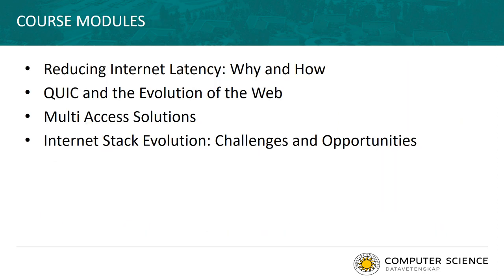The course consists of four course modules, each of which can also be studied as its own course. The first course module addresses reducing internet latency — why and how. In this module we look at how latency is a dominating factor for application performance, the different sources of delay and how they can be mitigated, paying particular attention to buffer bloat and the use of active queue management as a mitigation for this problem.